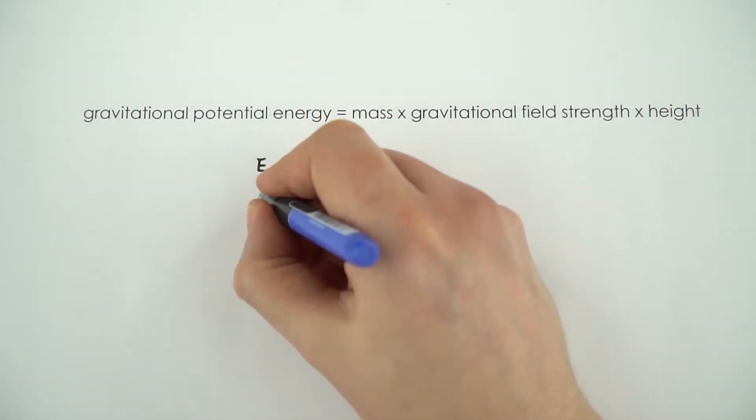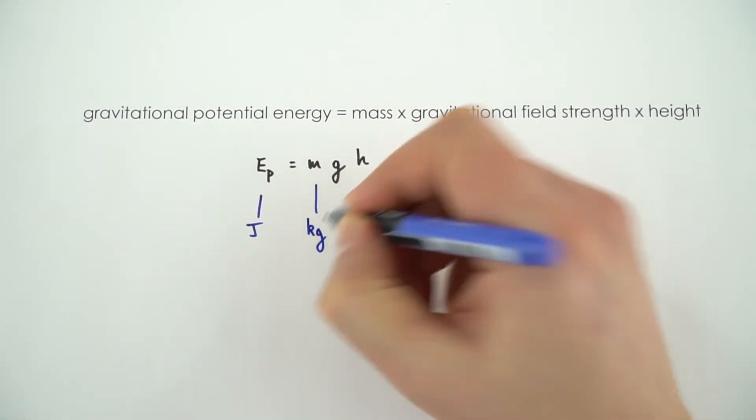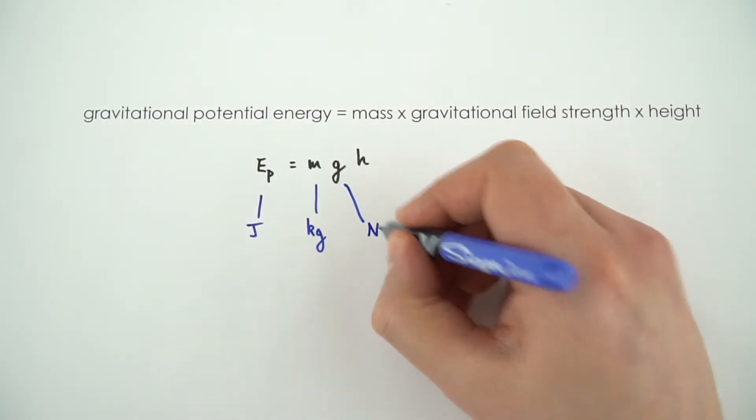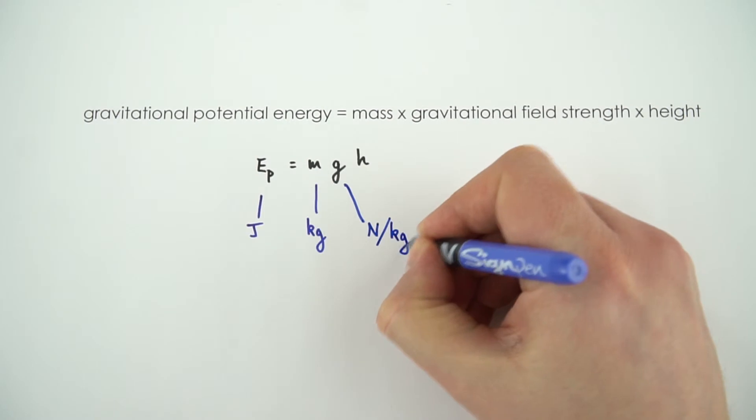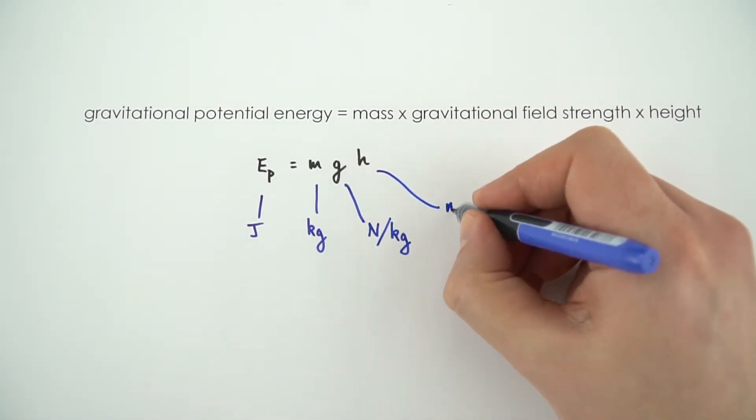We always measure our energy in joules. We always need to make sure that we're using our mass in kilograms. And because this is the gravitational field strength, this is expressed in newtons per kilogram. And then finally the height is given in meters.